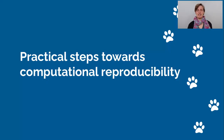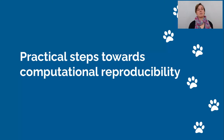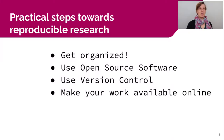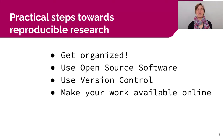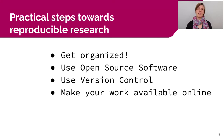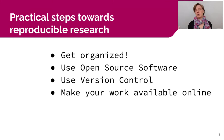Now I want to talk about the practical steps towards computational reproducibility. I'm focusing on the computational part because that's where my expertise lies and I think it's the most easily accomplishable. So what are the first steps you could take? First, I recommend getting organized. Then use open source software — that's a really good thing to start with. Use version control — that has a bit of a higher barrier but it has changed my life completely. And make your work available online, because if it's not available, it may be reproducible but no one can actually check.